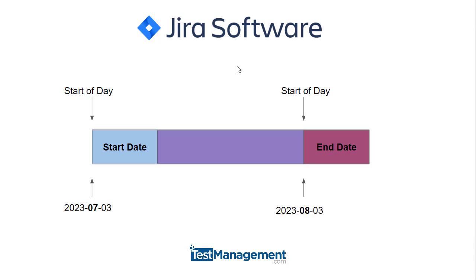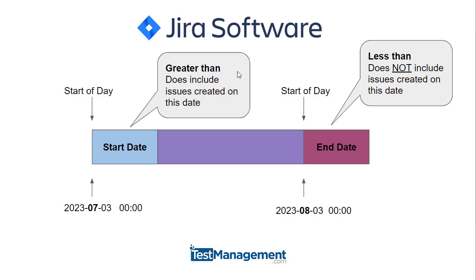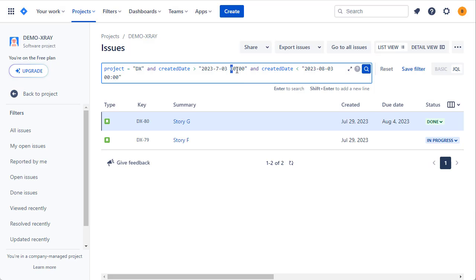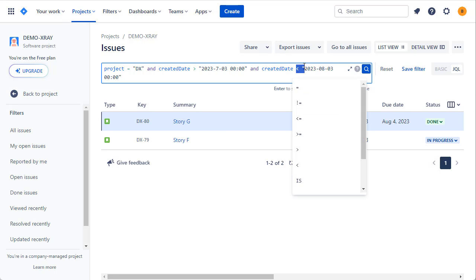This is just something to watch out for: Jira under the bonnet is using the date and time even if you're just entering the date. What you need to remember is that greater than does include issues created on that date, and less than does not include issues created on that date. For clarity and to avoid confusion, this is why I like to add the time into the date clause so that it makes it obvious what is and what isn't being included.